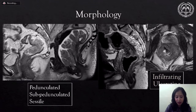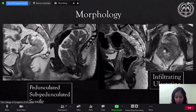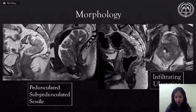MRI images show different morphological types of rectal cancer: polypoid growths with and without pedicles, infiltrating stricture-forming rectal cancer, and ulcerating intermediate signal rectal growths.